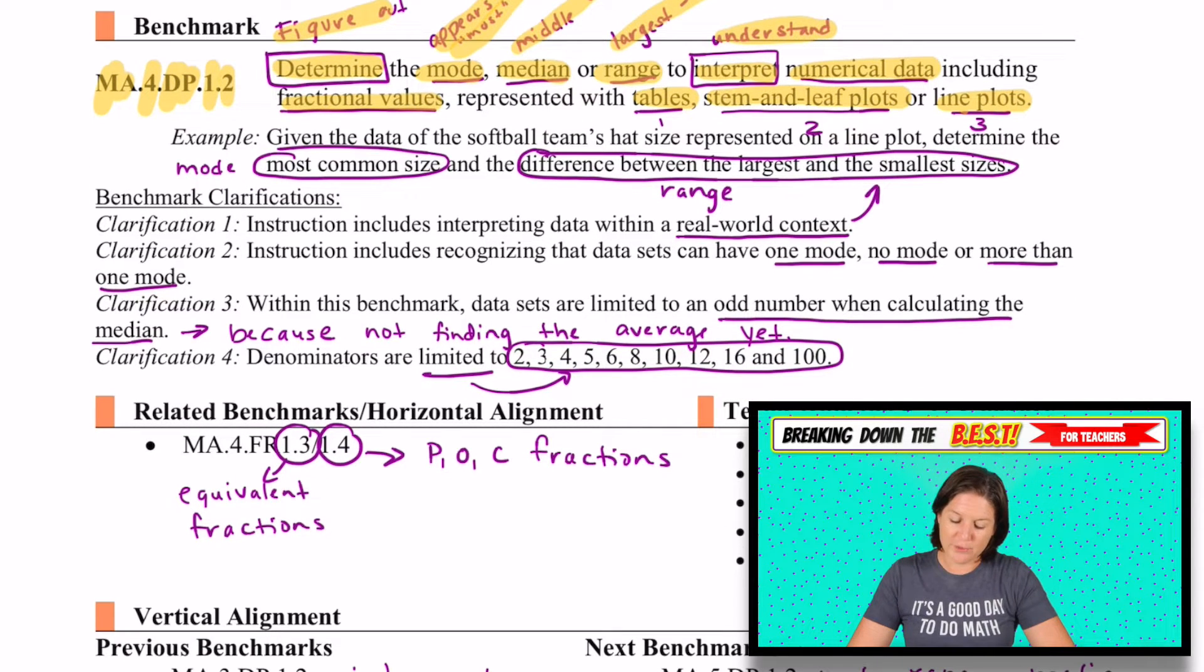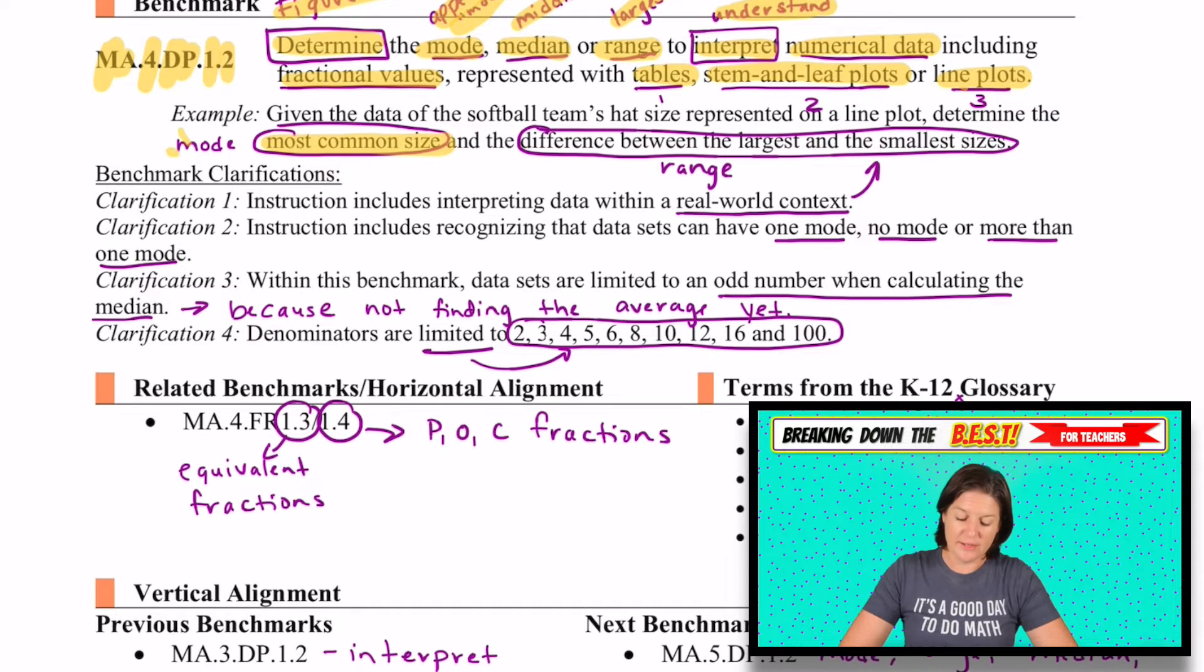If there was an example, it says, given the data of softball team's hat sizes represented on a line plot, determine the most common size, that would be the mode, and the difference between the largest and the smallest sizes, this would be the range.